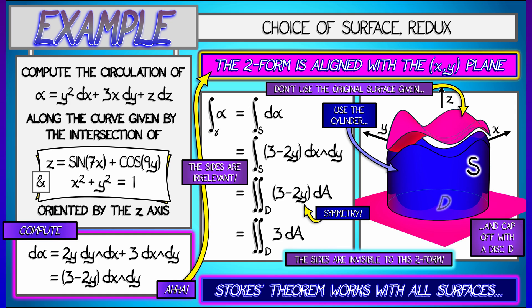That means I've really just got the integral of three over this disk with respect to area. To compute that, I take three times the area, it's a unit disk, that is three pi. That's our answer.